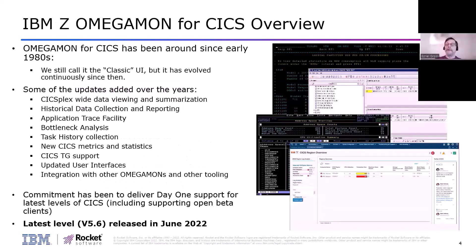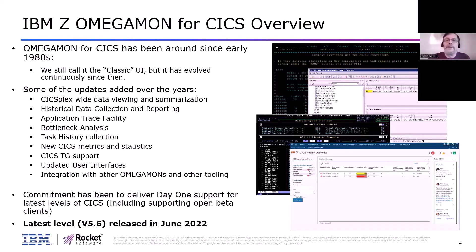Omegamon for CICS has been around for many years - since 1980. It started with the classic UI interface and has evolved from there. One of the key capabilities is CICSPlex-wide data viewing and summarization. You can actually start at the CICSPlex level and drill down from there.